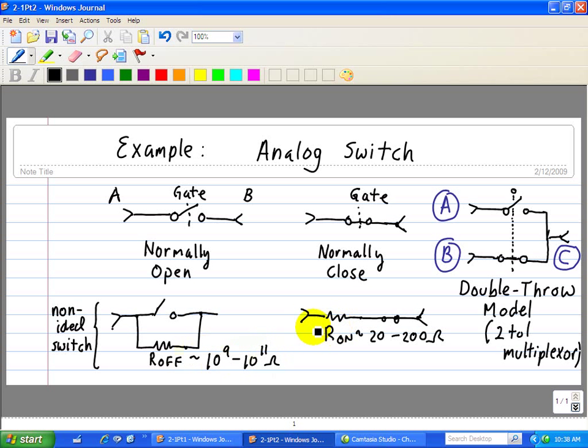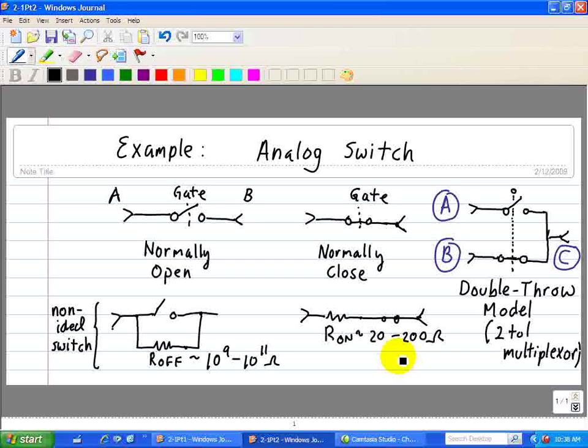And then on the other hand, when a switch is closed, there is a finite resistance. So when it's normally closed, it acts like a short circuit, which has very little resistance. For the non-ideal case, R on is 20 to 200 ohms.